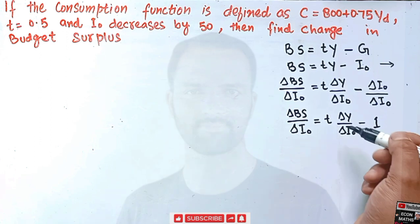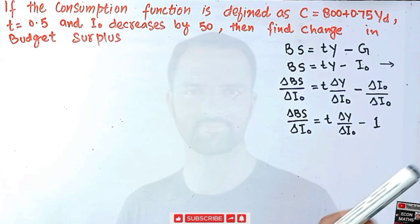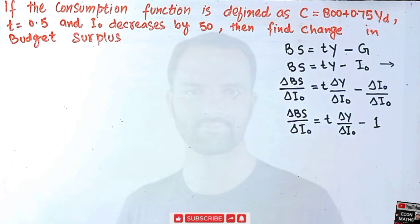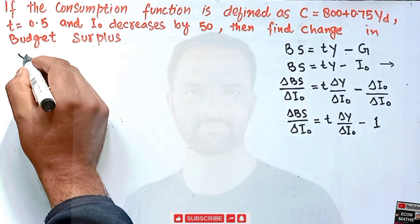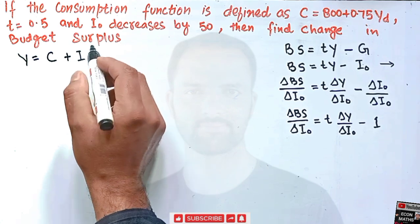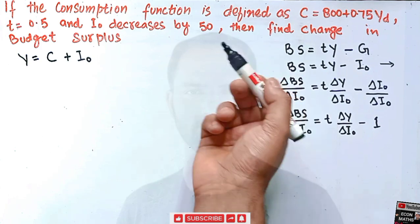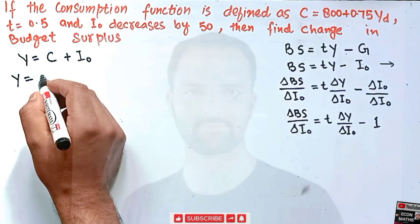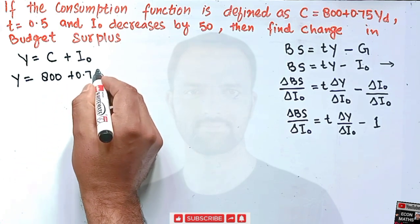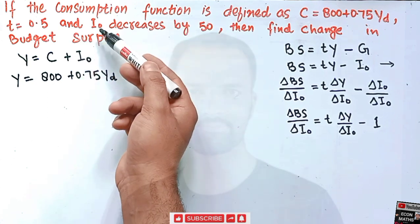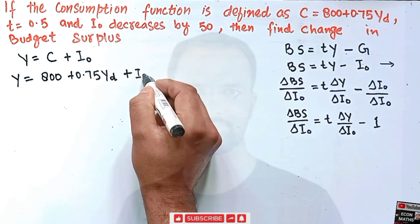Now we need to find dy/dI₀ — what happens to income when autonomous investment changes. For that, we first write the income model: Y = C + I₀, since government expenditure and net exports are not given. C is given as 800 + 0.75·Y_d, and since the initial value of I₀ is not given, we write it as I₀.